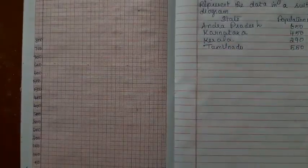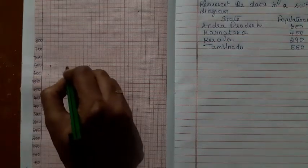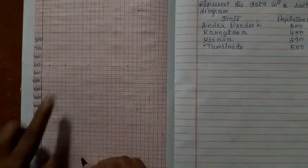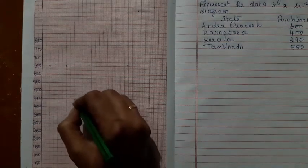For Andhra Pradesh, it is 650. 650 is here. So this is for Andhra Pradesh. And for Karnataka, leave 1 space, 1 cm space. And Karnataka, it is 450.